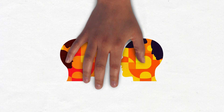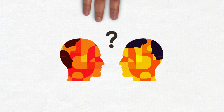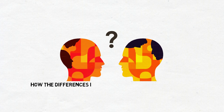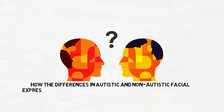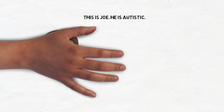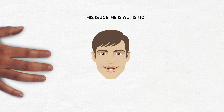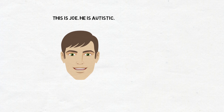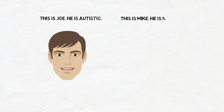This is a short video to explain how the differences in autistic and non-autistic facial expressions may lead to less successful social interactions. This is Joe. He is autistic. And this is his friend Mike. He is not autistic.